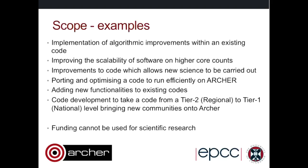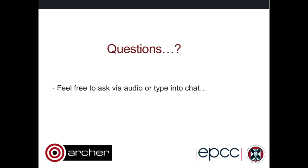Another possibility is porting a code to ARCHER or optimising a code to run efficiently on ARCHER, or adding new functionalities to existing codes. You may have a code that presently runs on a tier-two regional system — say a university cluster — and you want to bring it up to tier one, ARCHER level. But as I mentioned, funding can't be used for the actual scientific research itself; it's just for working on the codes which will enable you to do your science.